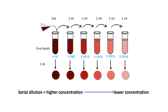To perform serial dilution, mix 1 ml of sample in 9 ml of saline water or broth. The dilution becomes 1 to 10, meaning 1 portion of sample out of 10 portions of liquid. Now take out 1 ml of liquid from this 10 ml with the help of a pipette and transfer it to another tube containing 9 ml of broth or saline. The dilution then becomes 1 to 100 — again a 10-fold dilution.